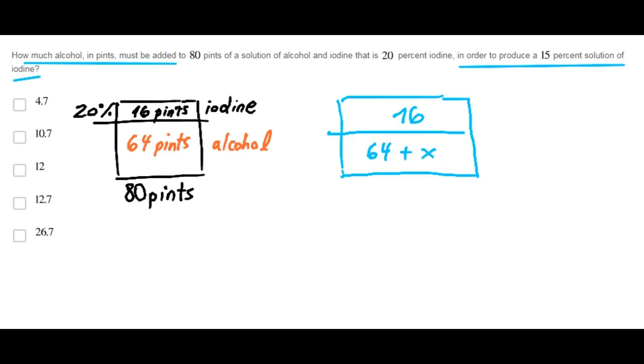The iodine stays the same. And when we add some alcohol to the solution, we produce a 15% solution of iodine. So, iodine represents 15% of the new solution.